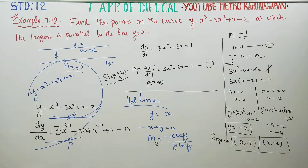Therefore the required points are (0, minus 2) and (2, minus 4). Thank you.